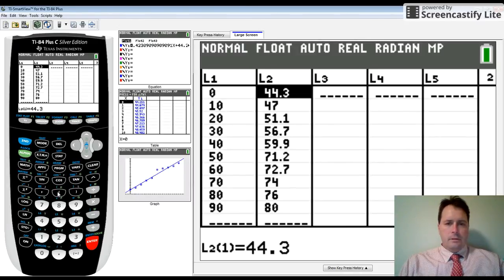To start with, I've already entered some data. The L1 list shows the year since 1900. So 10 is 1910, 20 is 1920 under L1, and under L2 is the life expectancy of a male during that time.